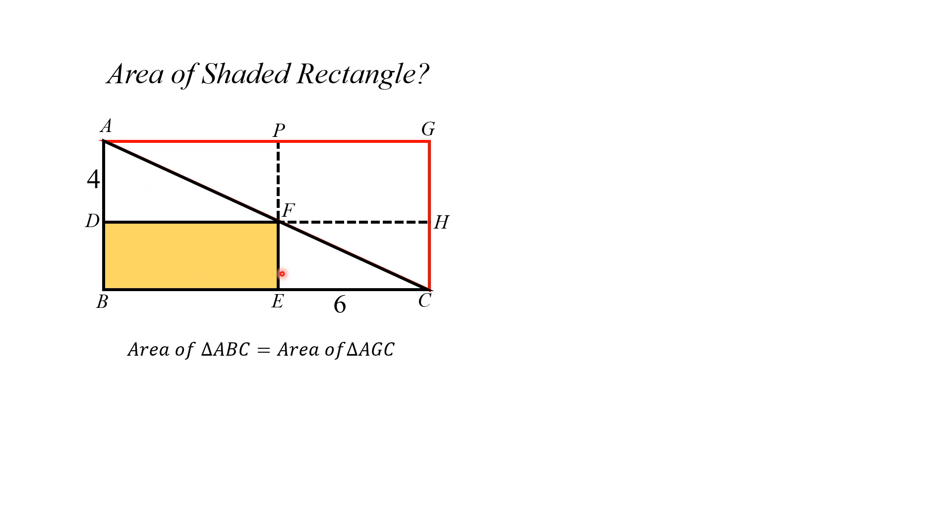Now we can see that area of ABC is equal to the sum of these three areas, so we can write it as area of ABC equals area of ADF plus area of DBEF plus area of CEF, and on the similar manner this area AGC is also the sum of these three areas.